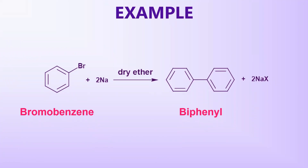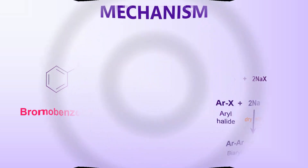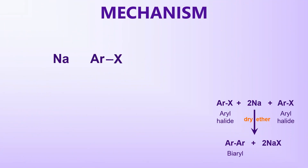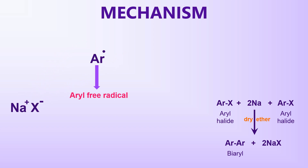A well-known demonstration of the Phytic Reaction is the formation of biphenyl when bromobenzene reacts with sodium metal in dry ether. Initially, a single electron is transferred from sodium metal to the aryl halide, causing heterolytic cleavage of the Ar-X bond, forming an aryl free radical and a halide ion. Subsequently, another electron is transferred from a sodium atom to the aryl free radical, leading to the formation of an aryl carbanion.